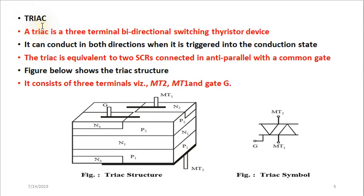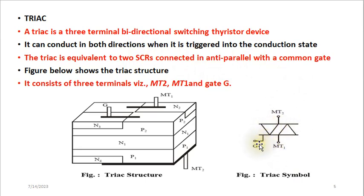The TRIAC — even from the name — is a three-terminal device and it is also a bidirectional switch, meaning it can conduct in both directions when triggered into the conduction state. The TRIAC is equivalent to two silicon-controlled rectifiers connected in anti-parallel mode. As we can see from this diagram, it has three terminals: MT1, MT2, and the gate, where we supply our control signal to trigger it into operation.